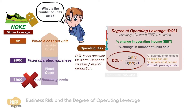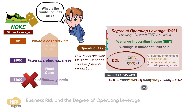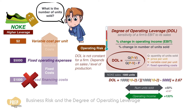If NOKEY is selling 1,000 units per month, its DOL will be 2.67. This means that if the number of units sold increases by 50% next month, the operating income will be up by 133%. And if the number of units sold decreases by 50%, the operating income will be down by 133%.